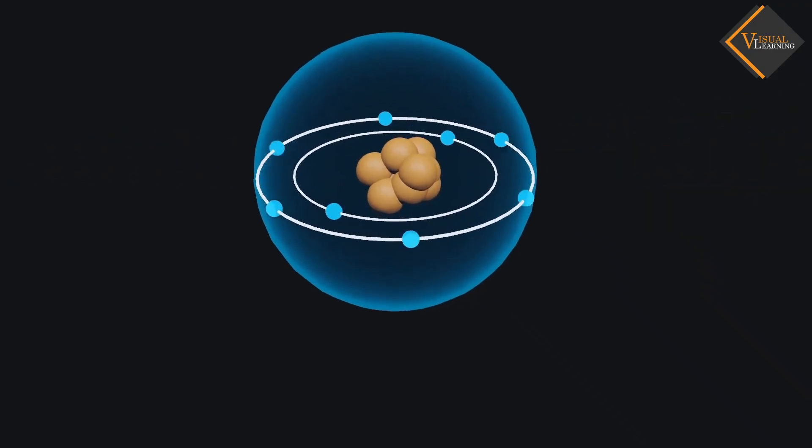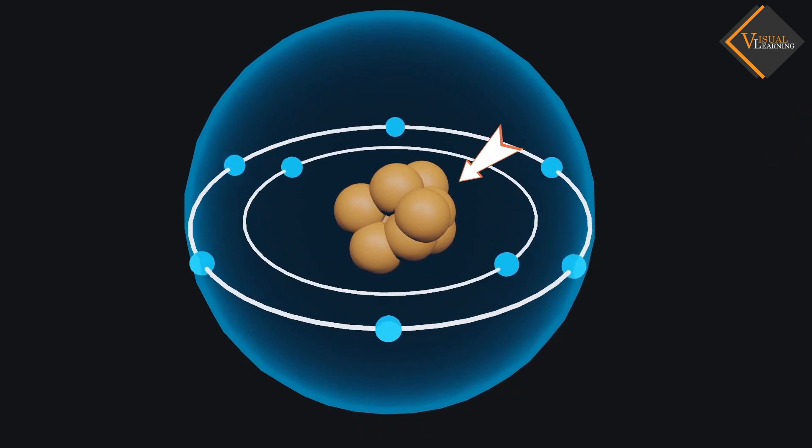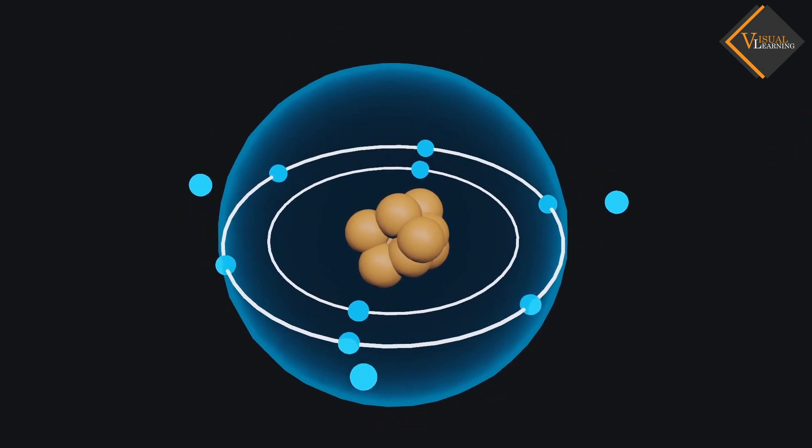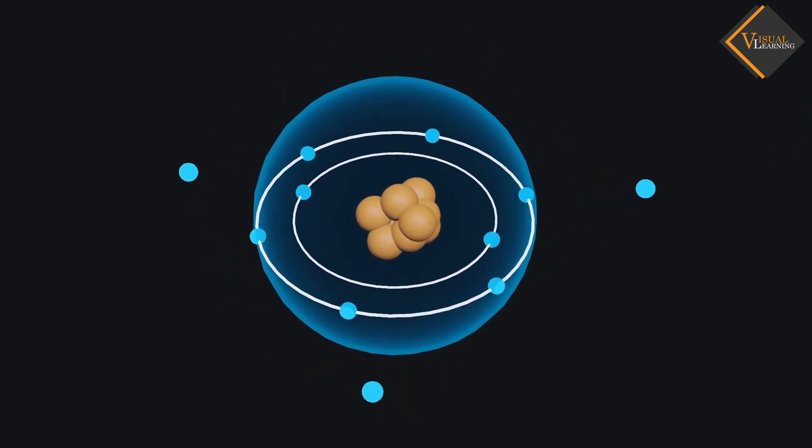It also appeared that the protons were in the interior of the atom. Whereas, electrons could easily be removed off from the atom, but not the protons.